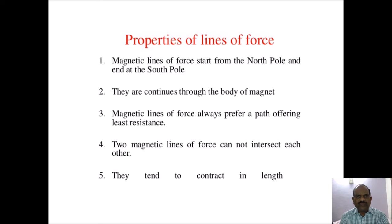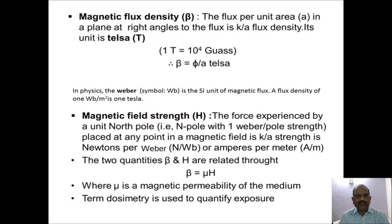The properties of lines of force are: magnetic lines of force start from the north pole and end at the south pole; they are continuous through the body of the magnet; magnetic lines of force always prefer a path offering least resistance; two magnetic lines of force cannot intersect each other; and they tend to contract in length. Next, magnetic flux density is denoted by beta. The flux per unit area A in a plane at right angles to the flux is called flux density, with units of Tesla (T). One Tesla equals 10 raised to 4 Gauss.